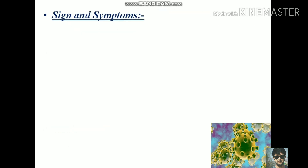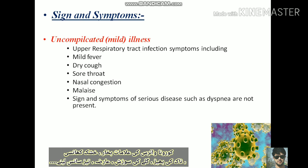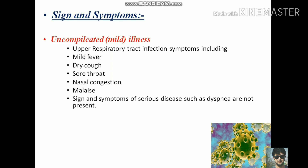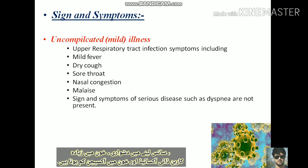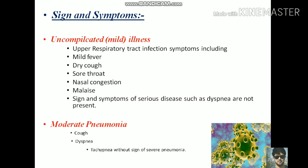Regarding the signs and symptoms of COVID-19, we divide them into various categories. In uncomplicated illness, patients usually present with symptoms of upper respiratory tract infection including mild fever, cough, sore throat, nasal congestion, malaise, headache, or muscle pain. Signs and symptoms of serious disease such as dyspnea are not present.